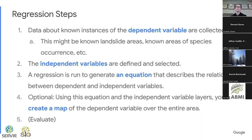Second, you define and select your independent variables. This might be something that you need to iterate on, depending on how good your outcome is. The third step is to run the regression to generate an equation, and this describes the relationship between the dependent and the independent variables. Sometimes this is where you want to stop — you just need that equation. But sometimes you want to use that equation to interpolate to a wall-to-wall map from some smaller area of dependent variables. You may have a hundred different data points across, say, the state of Wyoming, and you want to interpolate to a wall-to-wall map of the state of Wyoming. That would be step four. And then the fifth step is to evaluate.